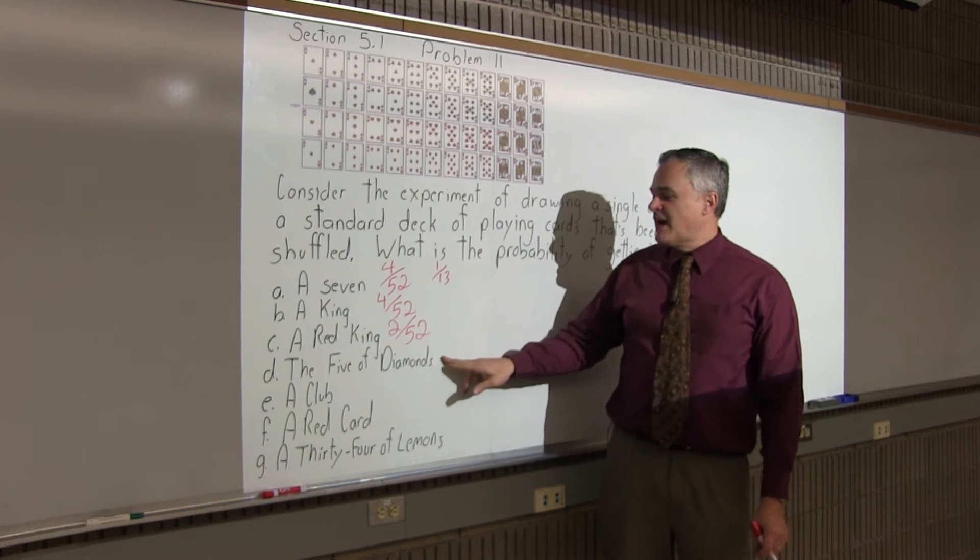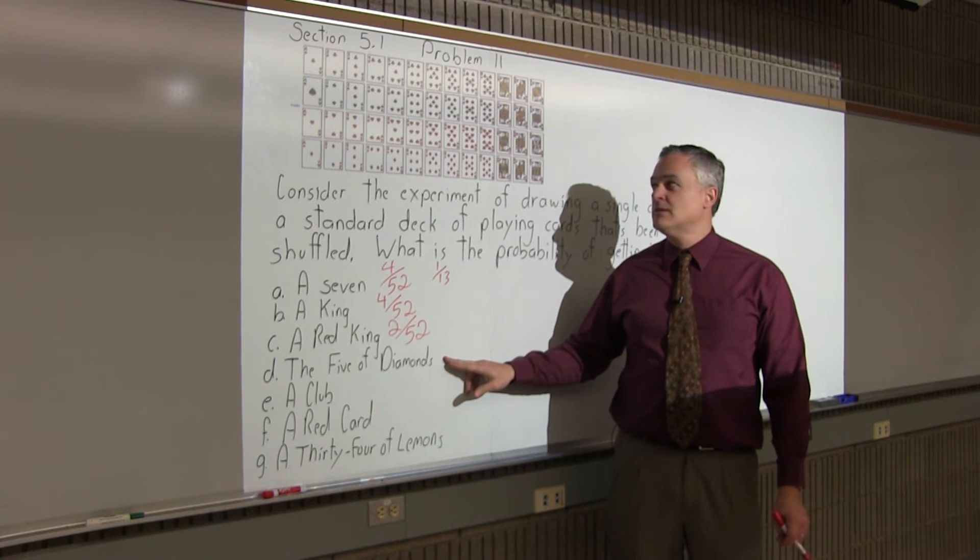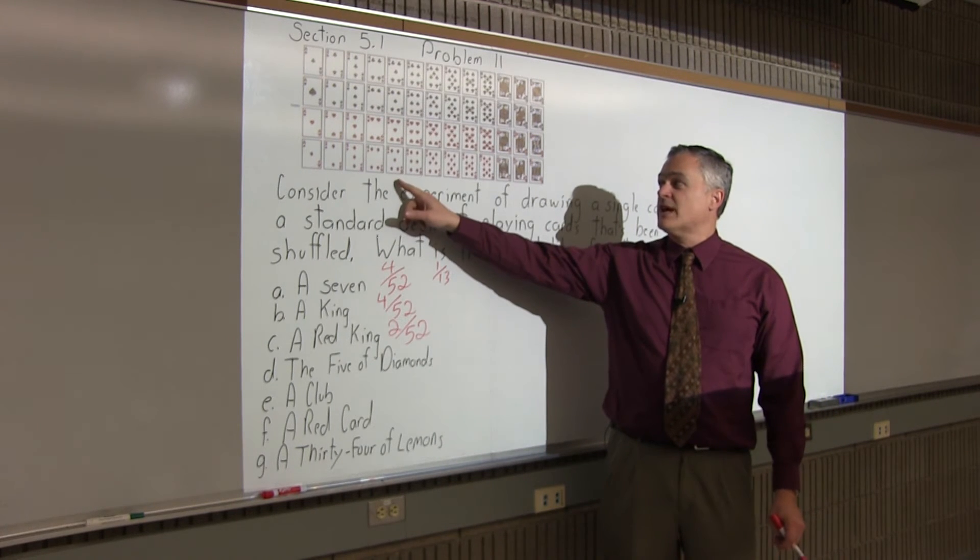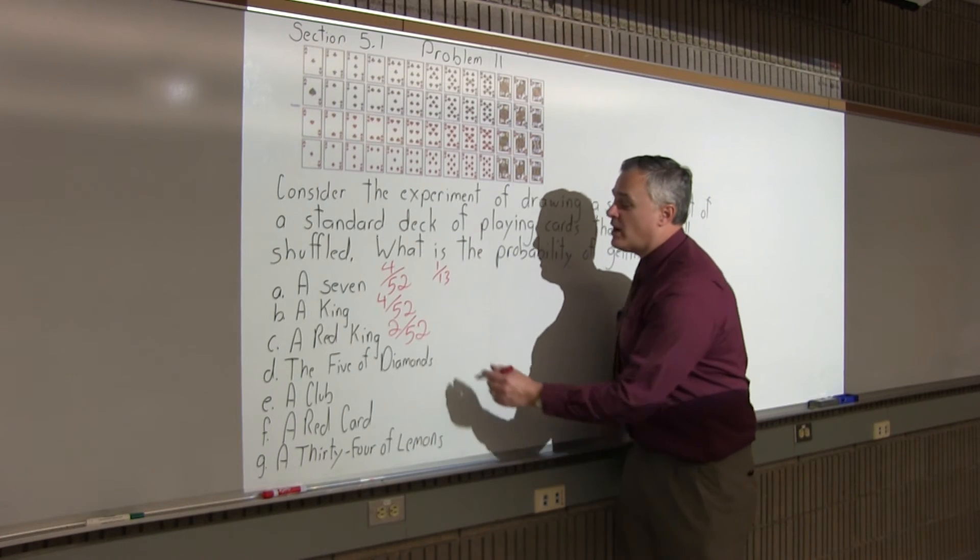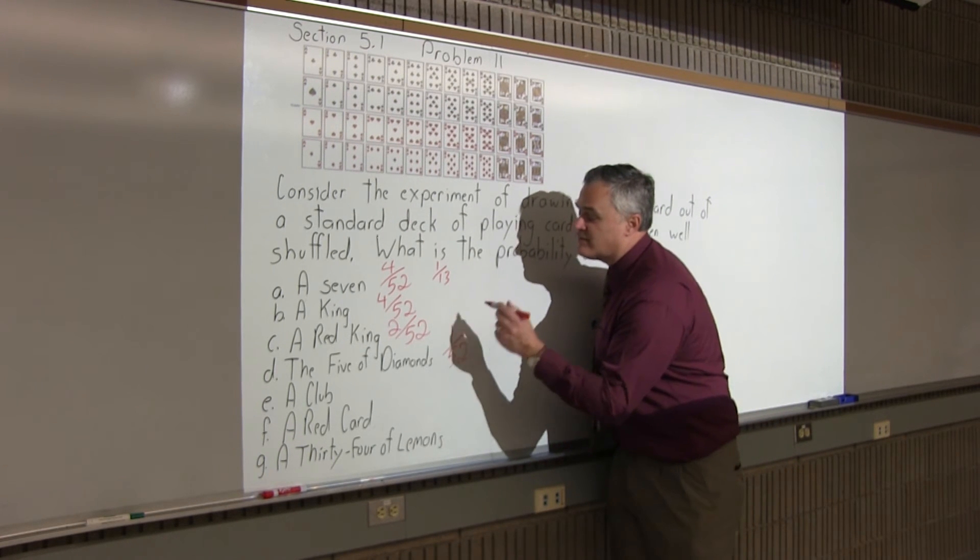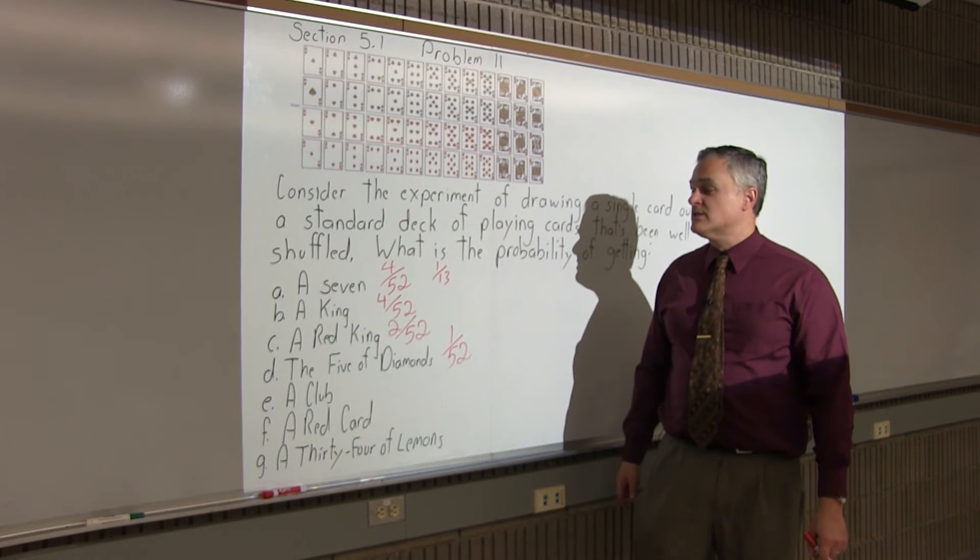What's the probability of getting the 5 of diamonds? There's only one 5 of diamonds. So, it would be 1 over 52. There's only one card in the whole deck that's the 5 of diamonds out of 52 cards altogether.